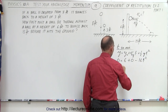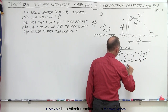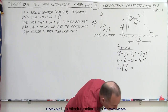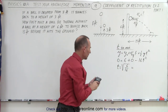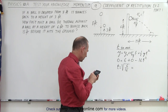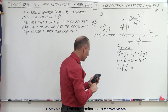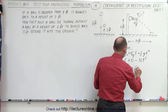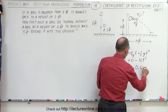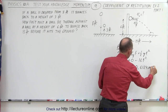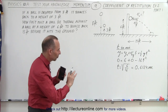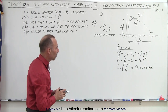Solving for t, we get t equals the square root of 6 divided by 16. Calculating that — 6 divided by 16, take the square root — gives t equals 0.6124 seconds. We keep a few extra significant figures to avoid round-off error.